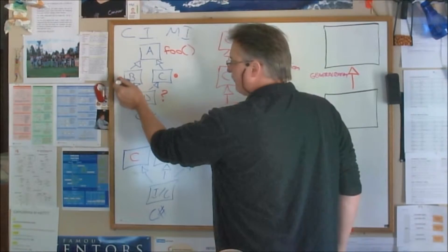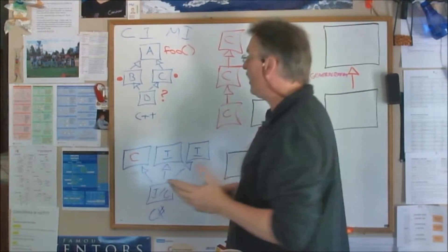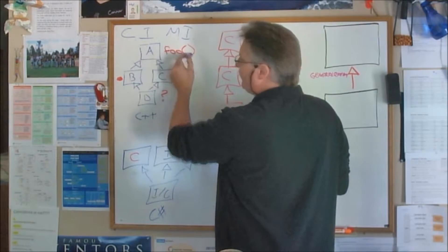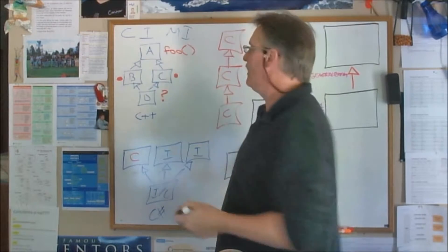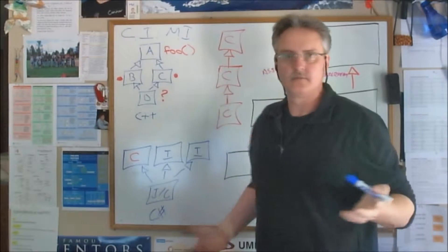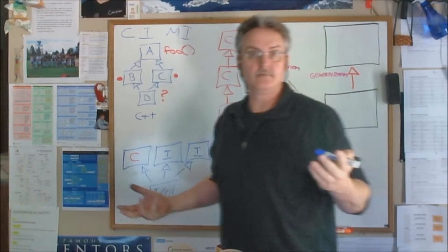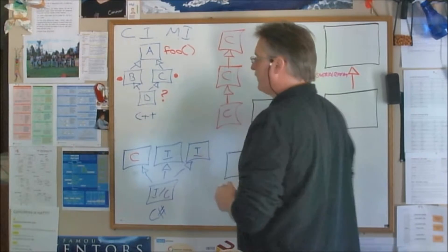But if D inherits from B and C, that's when the problem happens. Why? Well, if A has FU defined and it's an implementation, it's a class implementation of FU, and then C is getting it and B is getting it, which one does D use? Right? Which one? So that was the problem. That's why I have a question mark there.